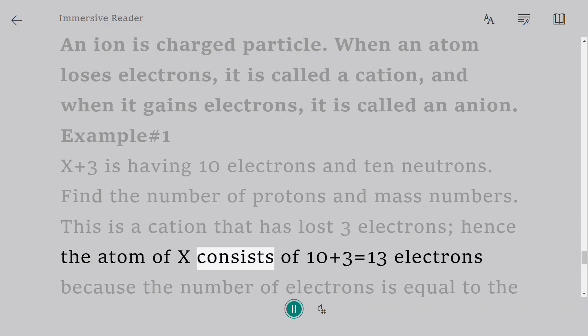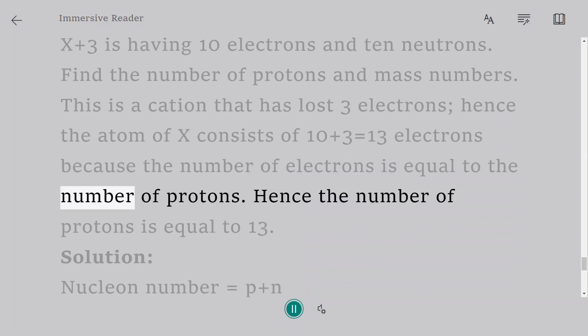Hence the atom of X consists of 10 plus 3 equals 13 electrons because the number of electrons is equal to the number of protons. Hence the number of protons is equal to 13.